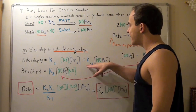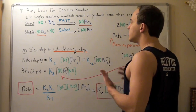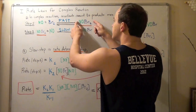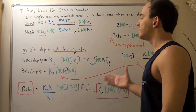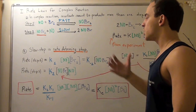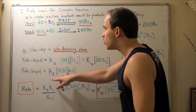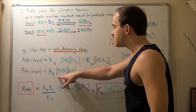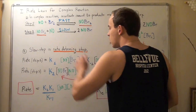Since the forward rate equals the reverse rate at equilibrium, we set K1 times [NO] times [Br2] equal to K-1 times [NOBr2]. Now let's write the rate law for the second step, the slow step: rate equals K2 times the concentration of NOBr2 times the concentration of NO. Notice that NOBr2 appears in both the equilibrium expression and the slow step rate law, so we can substitute it.